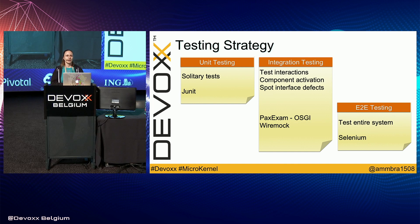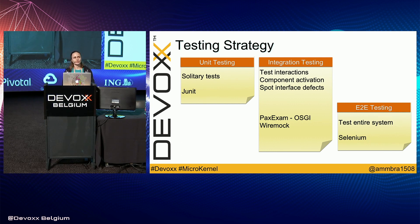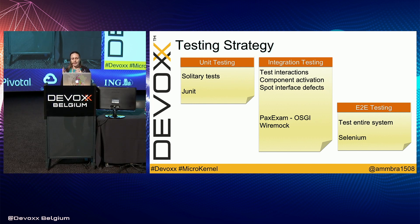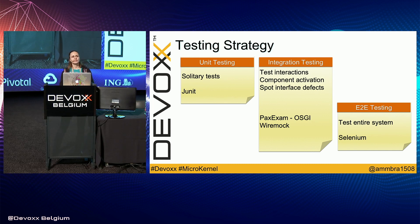From the testing point of view in microkernel architecture, you focus more on integration testing. Unit testing is familiar to most of us, and end-to-end testing is common for testers using Selenium. Integration testing is very important because we want to test interactions, component activation, and spot interface defects. For OSGI, you can use a framework called PaxExam; for Java 9 Plus implementations, you can use WireMock. Integration testing is also component testing — verifying that services and components got activated in OSGI bundles, and in Java 9 Plus, confirming that the interface is correctly provided and served for consumption.